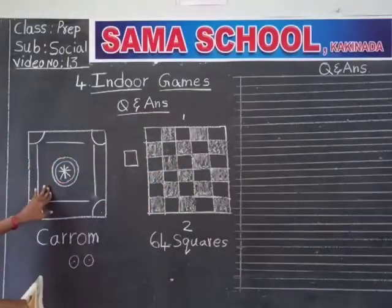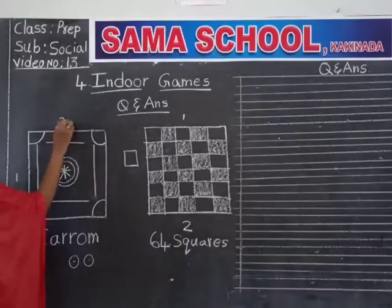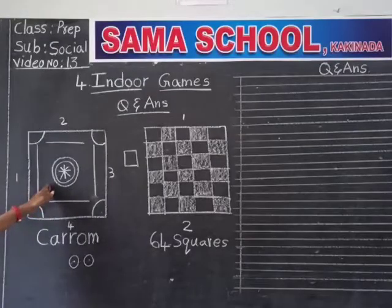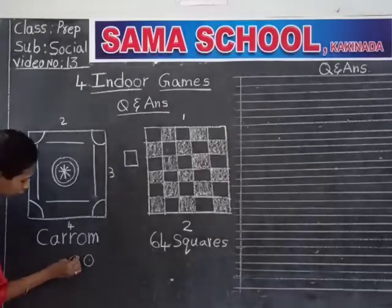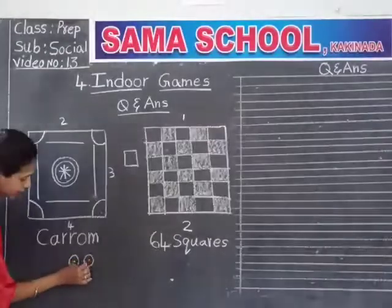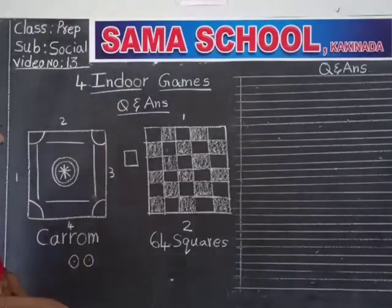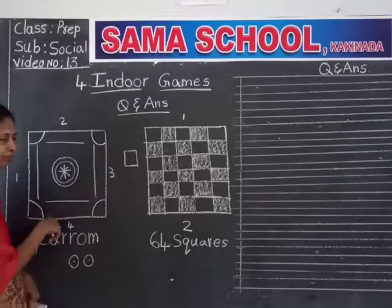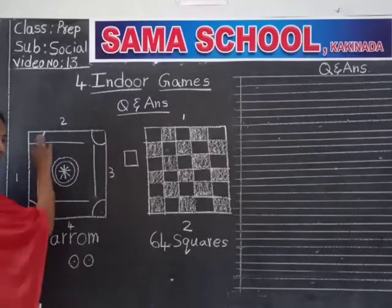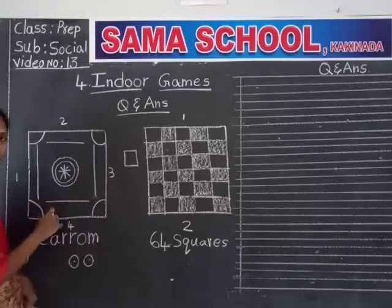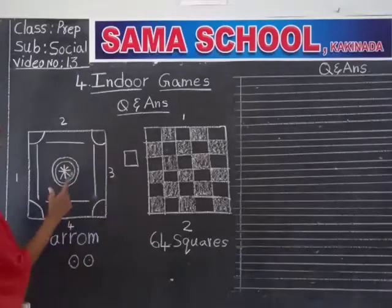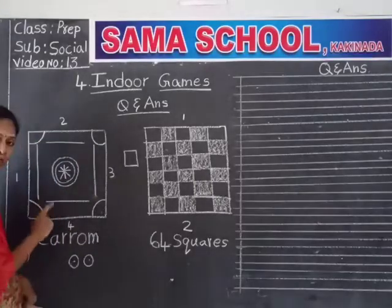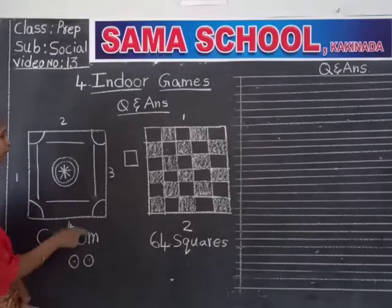This is the carom board I told you. In this one, 1, 2, 3, 4 — so 4 members will play this game. These are the coins — white coins, black coins, red coins. They are sitting on the board and pushing the coins. This game name is carom and this is the carom board.